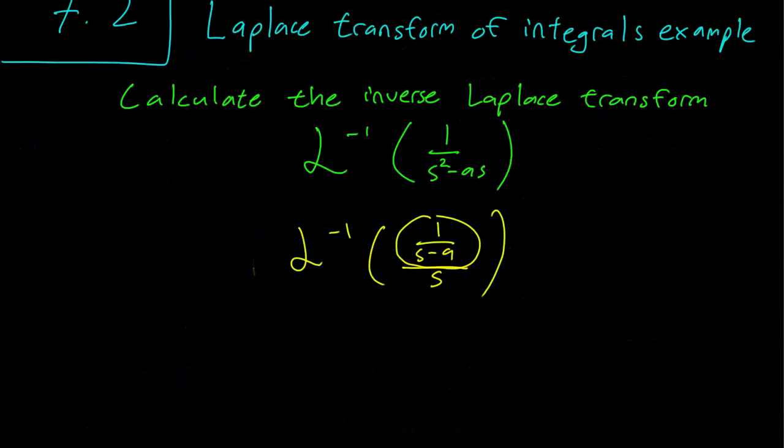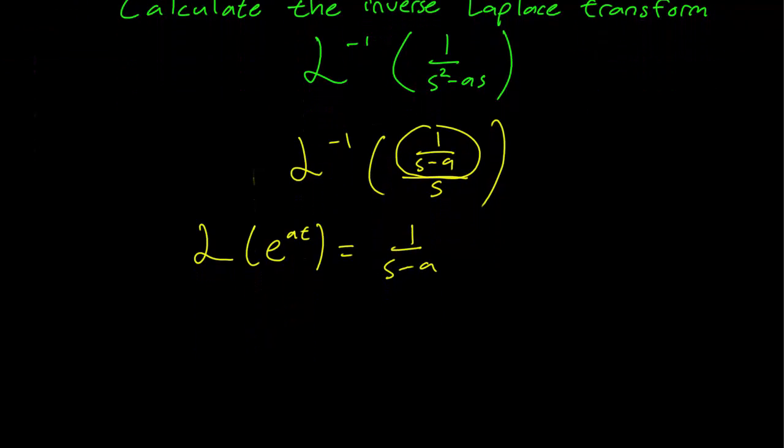The next step, so according to that table, the Laplace transform of e^(at) is equal to 1 over s minus a. Another way to write that down is that little f(t) equals e^(at) corresponds to big F(s) equals 1 over s minus a.